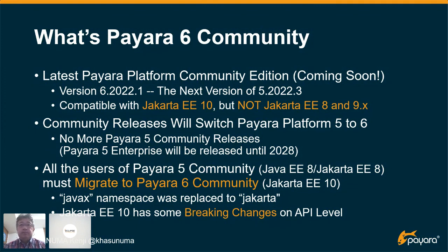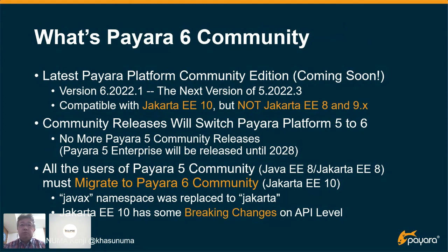今回お話しするのはパイアラのコミュニティ版です。もうすぐパイアラコミュニティ版の新しいバージョン6が登場します。現在公表されているのがα3というバージョンで、ソースコードではα4のRC3まで来ていますので、本当にもうすぐリリースになります。リリースされた時にはバージョン6.2022.1となります。現在の最新版はパイアラ5.2022.3で、その次のバージョンということになります。